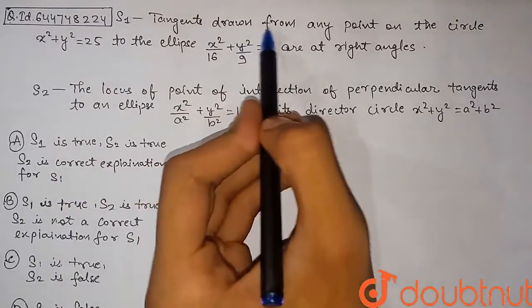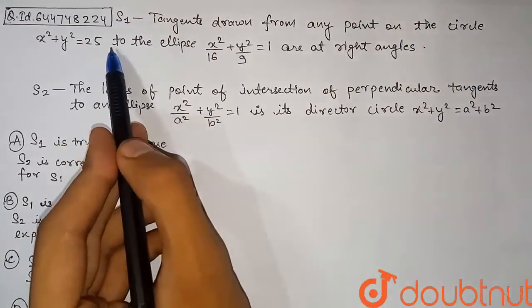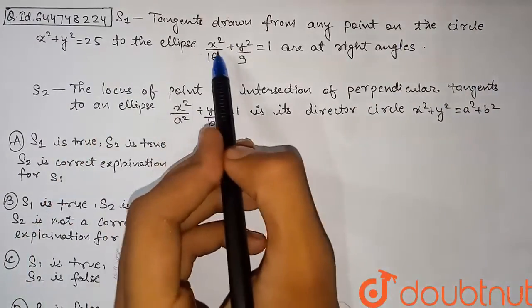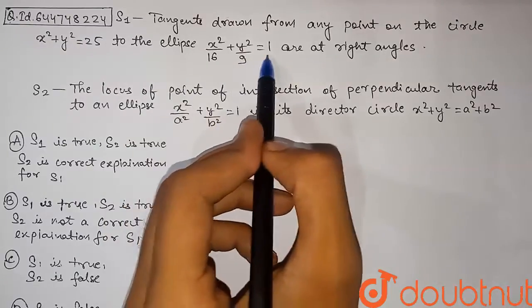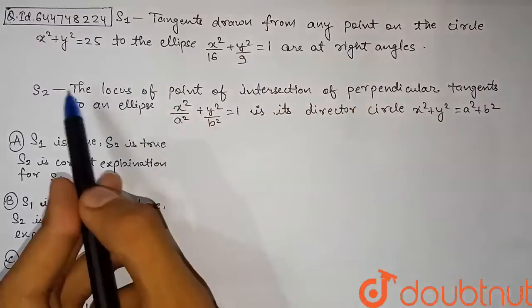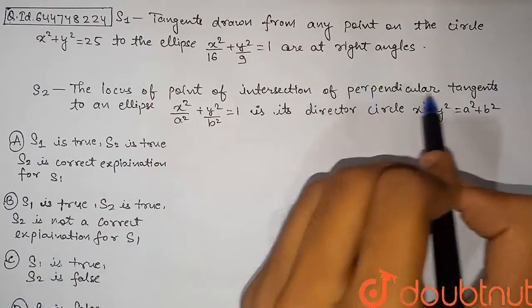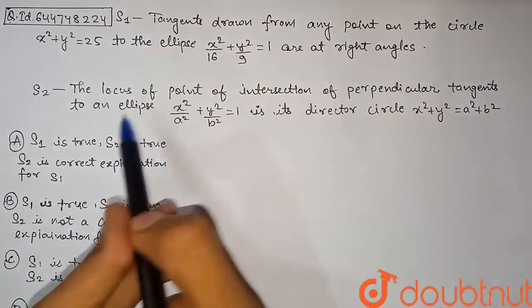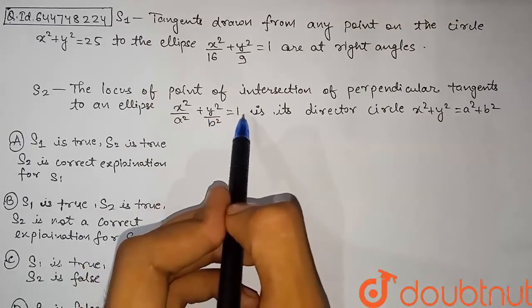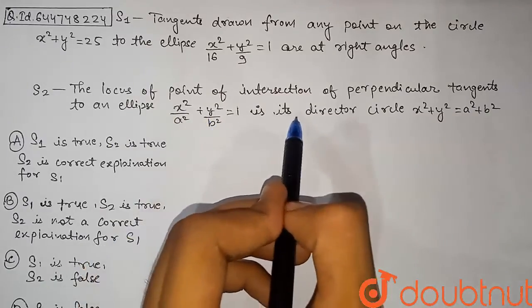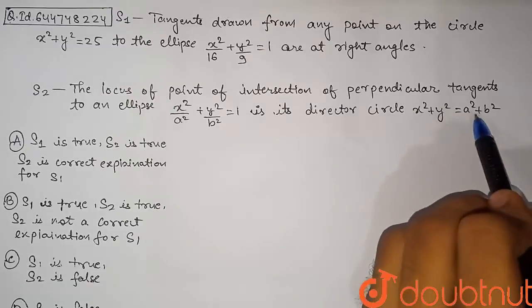The first statement: tangents drawn from any point on the circle x² + y² = 25 to the ellipse x²/16 + y²/9 = 1 are at right angles. The second statement: the locus of the point of intersection of perpendicular tangents to an ellipse x²/a² + y²/b² = 1 is its director circle x² + y² = a² + b².